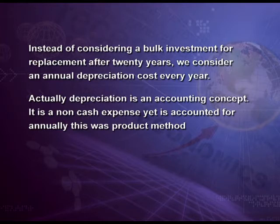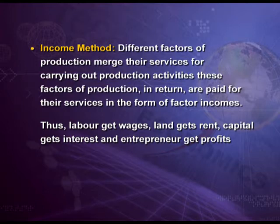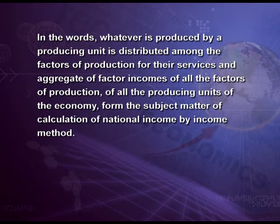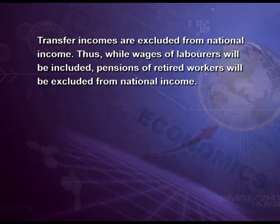This was the product method. Now, income method. Different factors of production merge their services for carrying out production activities. These factors of production in return are paid for their services in the form of factor incomes: labor gets wages, land gets rent, capital gets interest and entrepreneur gets profit. Whatever is produced by a producing unit is distributed among the factors of production for their services. Only incomes earned by owners of primary factors of production are included in national income. Remember, transfer incomes are excluded — so wages of laborers will be included, but pensions of retired workers will be excluded from national income.